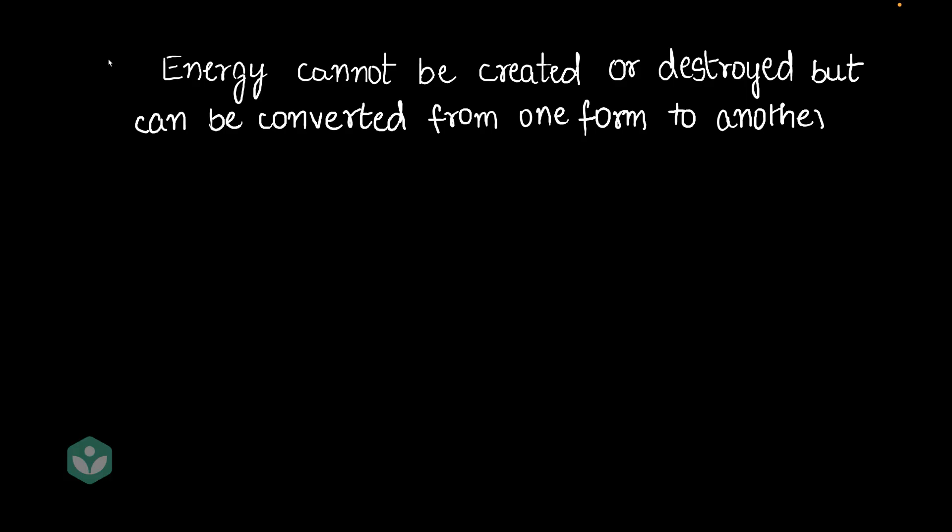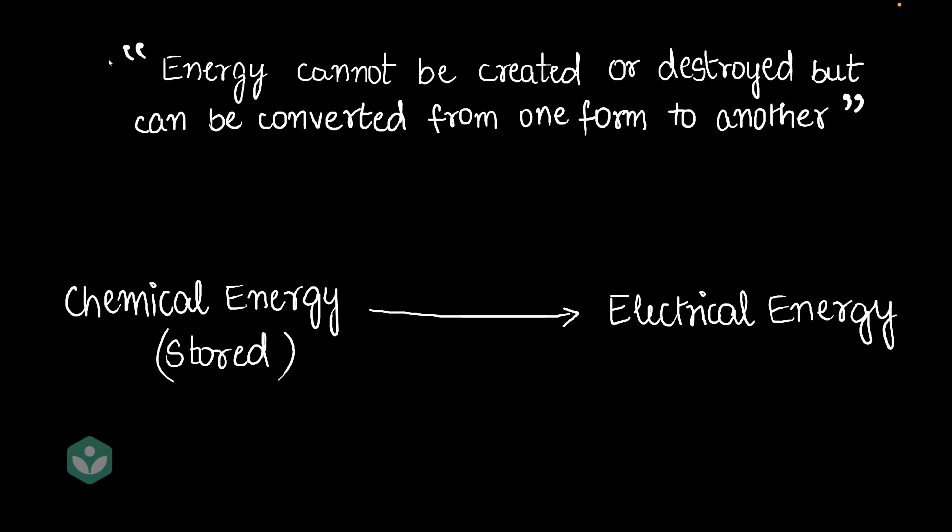Let me remind you of one of the most fundamental principles of physics, called the principle of energy conservation. This principle states that energy cannot be created or destroyed, but can be converted from one form to another. And a battery does just exactly that. A battery converts chemical energy, it stores chemical energy within itself, and then when required, it converts that into electrical energy. And this entire process is called discharging.